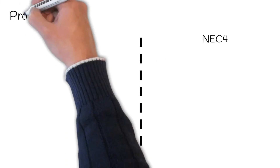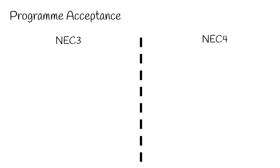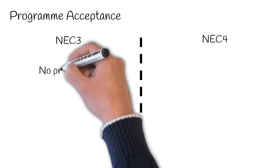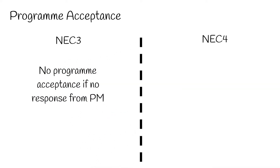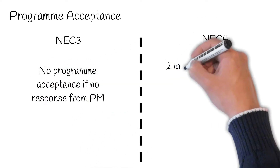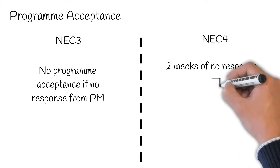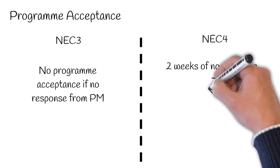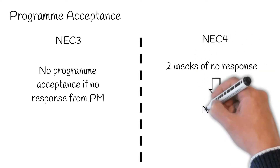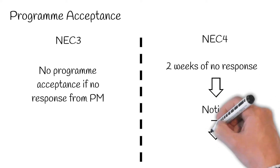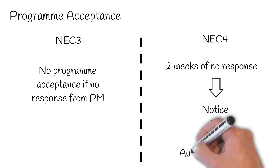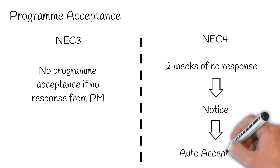Program acceptance. Unlike compensation events under NEC3, there is no provision for a program being accepted in the absence of a response from the project manager. This is corrected under NEC4. After two weeks of no response, the contractor may issue a prompt notice. Consequently, the program is deemed acceptable a week after the prompt if no response is given.